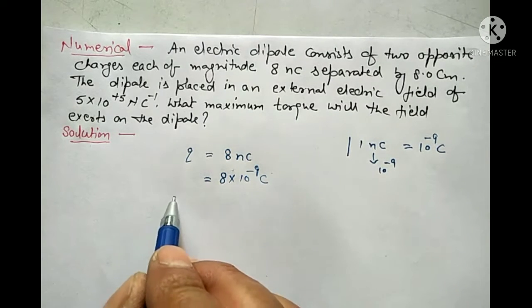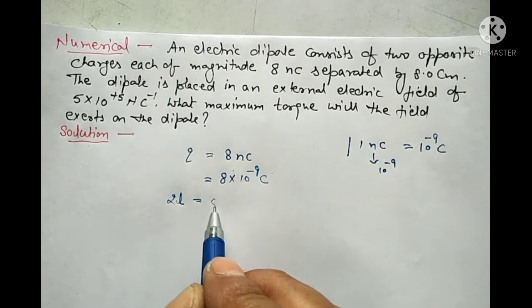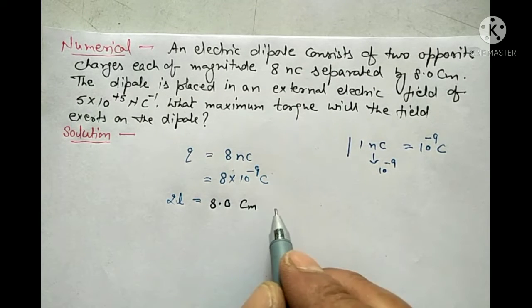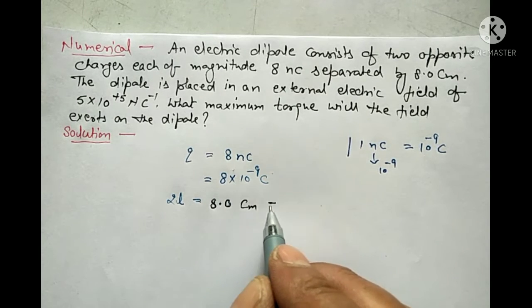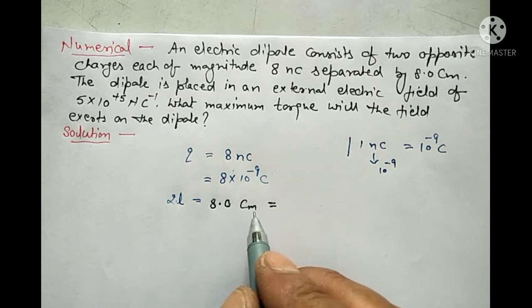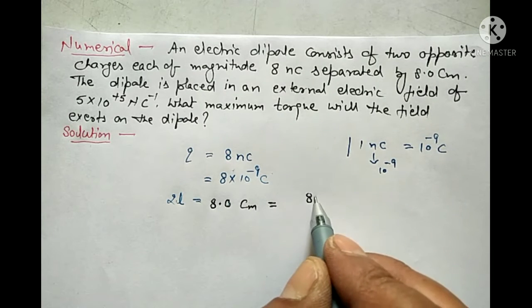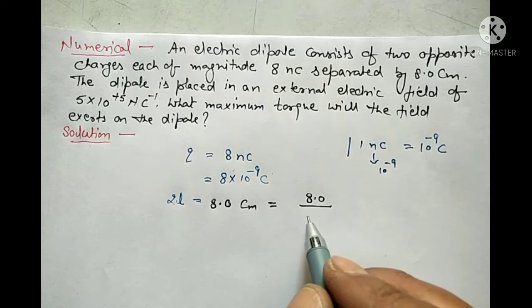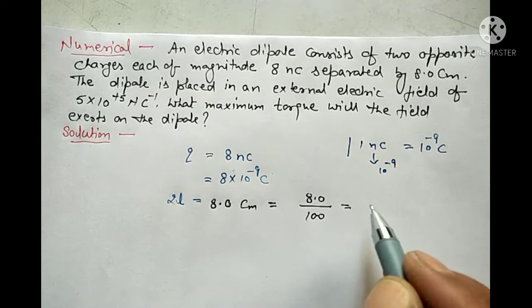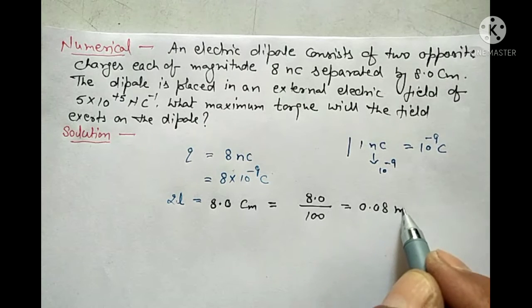Now the dipole length is also given: 2L is equal to 8.0 cm. We convert this into meters, so 8.0 divided by 100 gives 0.08 meter.